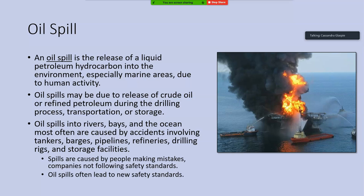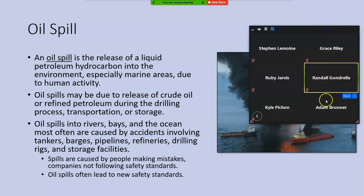Oil spills into rivers, bays, and the ocean are most often caused by accidents involving tankers, barges, pipelines, refineries, drilling rigs, and storage facilities. These are almost always accidents, typically caused by people making mistakes or by companies not following safety standards. As a result, oil spills often lead to new safety standards — new ways to prevent these kinds of things from happening in the future.